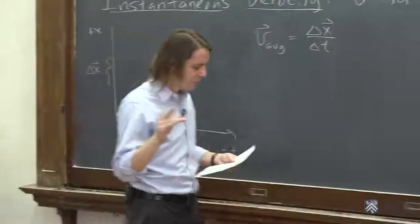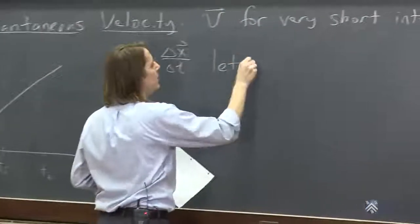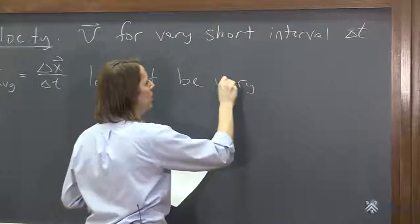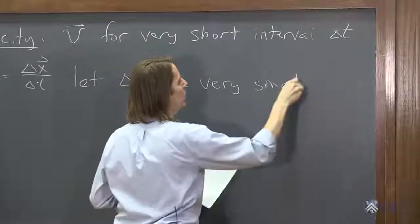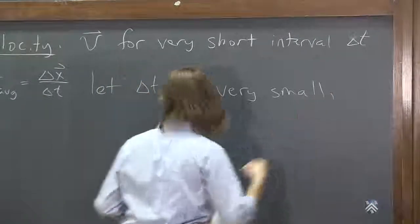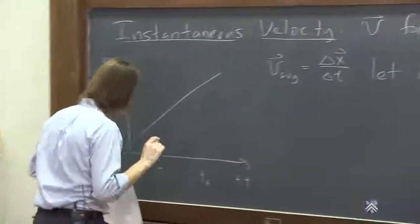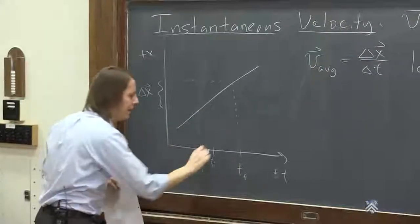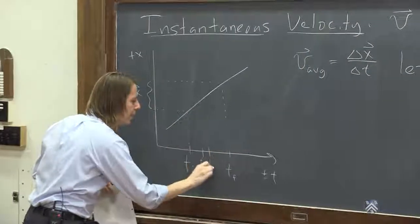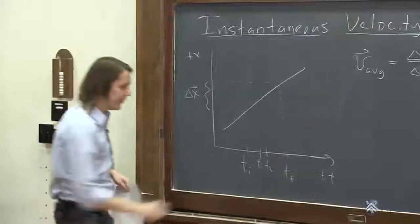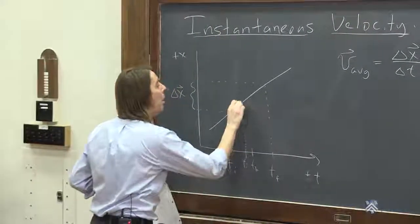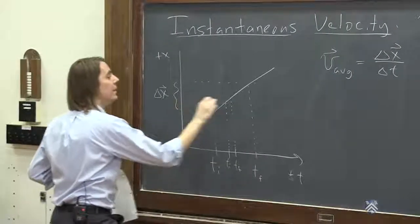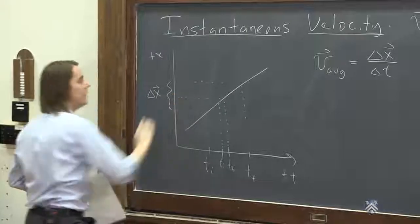So what we're going to do is, conceptually, we're going to let delta T be very small. And what we're going to do then, instead of this big delta T, let's put T initial here, and let's put T final there, right? That goes up there, that goes up there, that goes over, and that goes over.